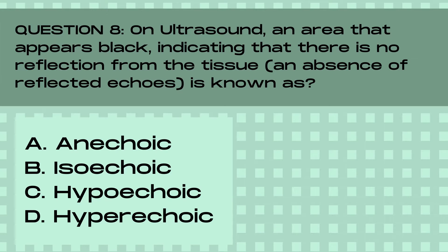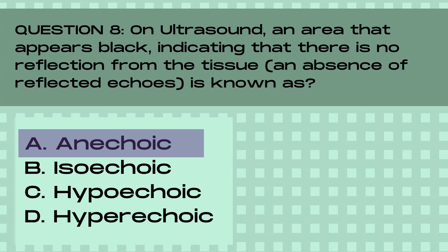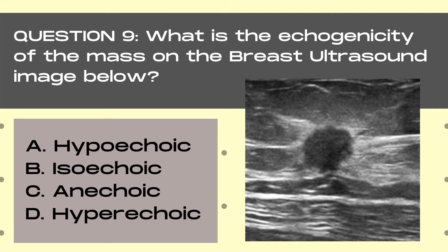Question 8. On ultrasound, an area that appears black, indicating that there is no reflection from the tissue and an absence of reflected echoes, is known as: A. Anechoic, B. Isoechoic, C. Hypoechoic, or D. Hyperechoic. And the answer is A. Anechoic. Anechoic structures on ultrasound are black, indicating fluid inside such as cysts, blood vessels, or milk ducts. Within anechoic areas, there is an absence of reflected echoes, meaning that no reflections are returning to the ultrasound transducer from within that area.